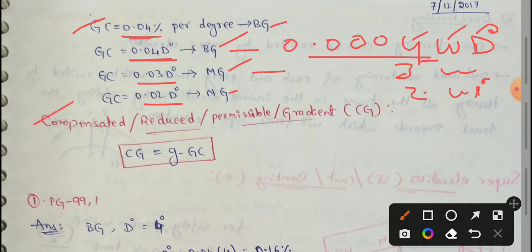Next, the compensated or reduced or permissible gradient formula is: Cg = g minus gc, where g means the gradient and gc means grade compensation. This is also an important formula.